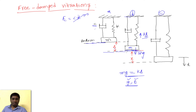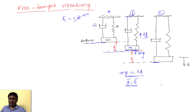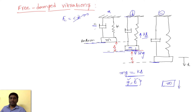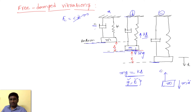Now I give a small perturbation or displacement in the downward direction. At the instant where the mass is at distance x from the equilibrium position, I examine the forces acting on the mass. Since mg = k·delta, gravity is neglected. The inertia term mẍ acts downward. Because the mass is in motion, apart from the spring force there is also a damping force c·ẋ opposing the motion.